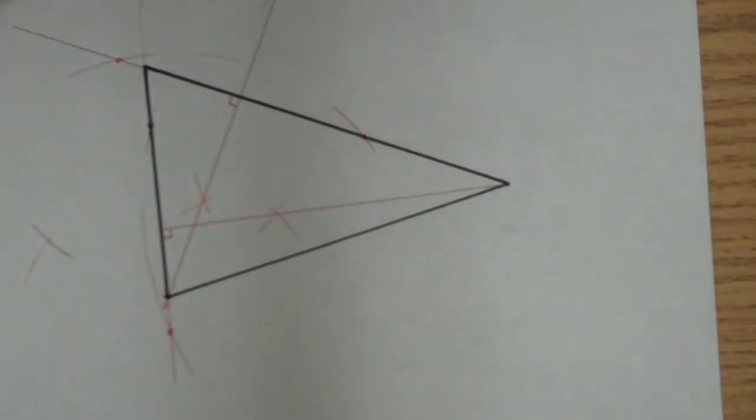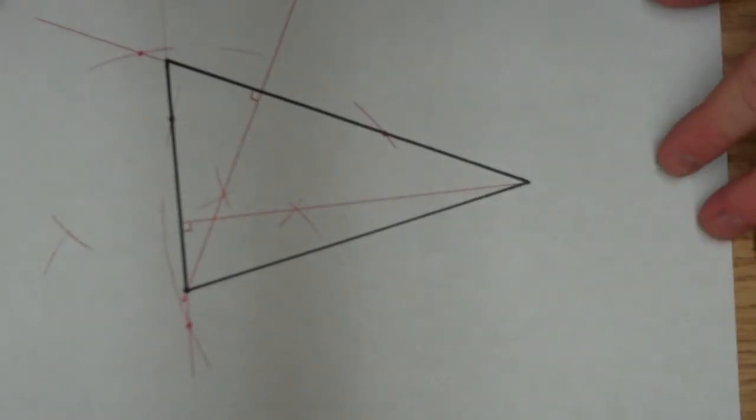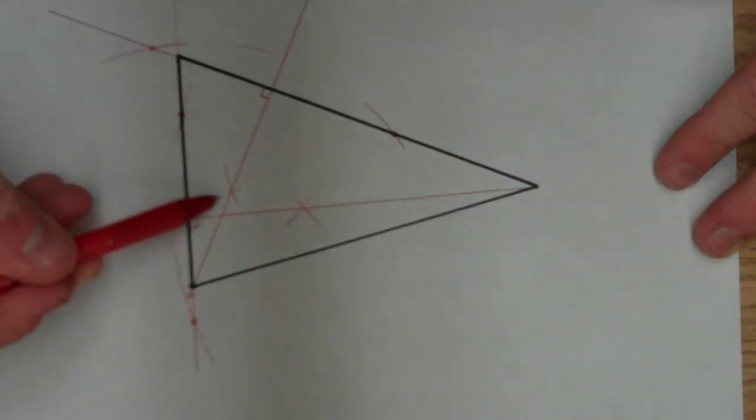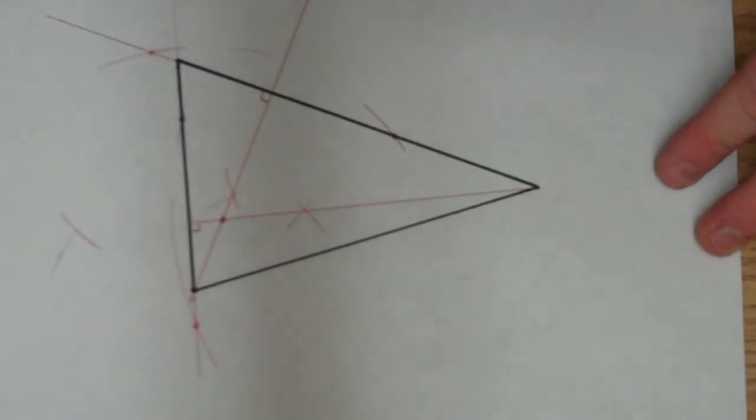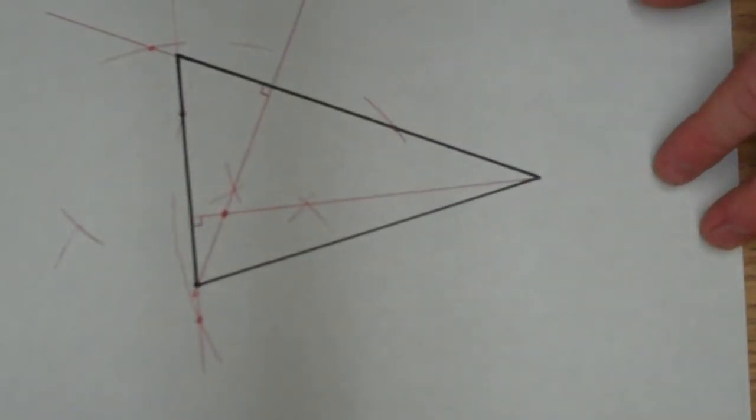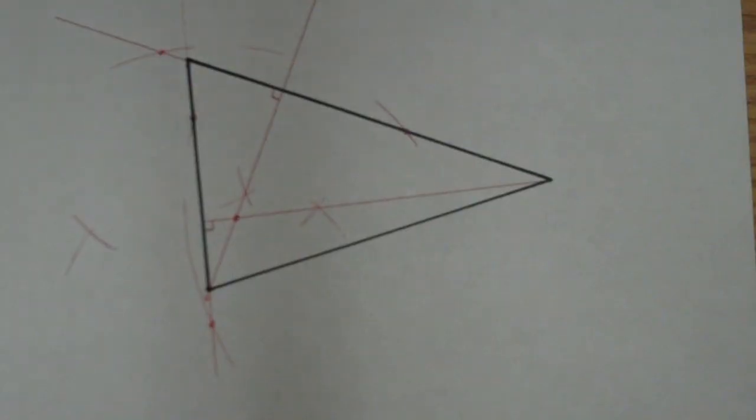Now, again, as with the other two constructions, the three constructions that we did, you don't have to do all three altitudes. You can just do two. The third one would be implied. It would travel right through here. And so the intersection of those two points right there is my orthocenter.